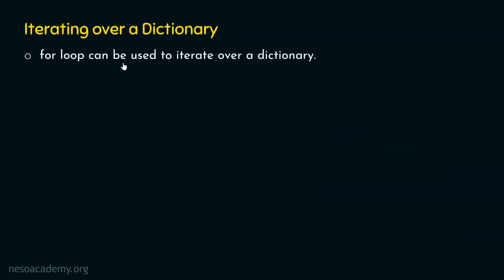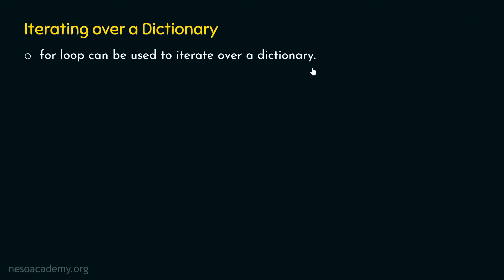For loop can be used to iterate over a dictionary. We have already learned in our previous presentation how for loop can be used to iterate over a list. Similarly, we can use for loop to iterate over a dictionary. Now let's understand with the help of an example how for loop can be used to iterate over a dictionary.